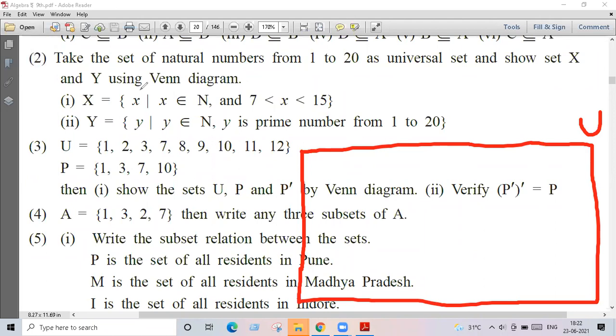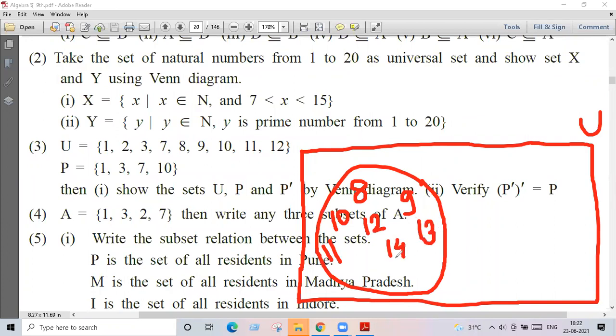So what is set X guys? It is the set of natural numbers greater than seven, smaller than fifteen: eight, nine, ten, eleven, twelve, thirteen, fourteen. This is your X.